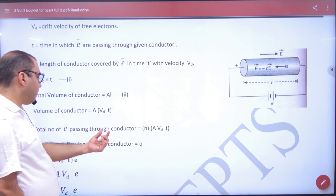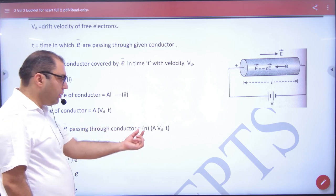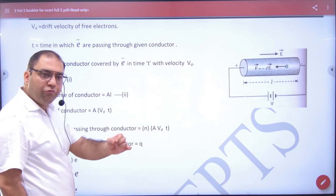Total number of electrons passing through a conductor is N. N means number of electrons per unit volume.